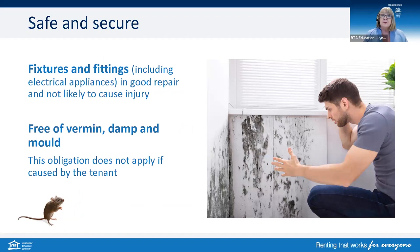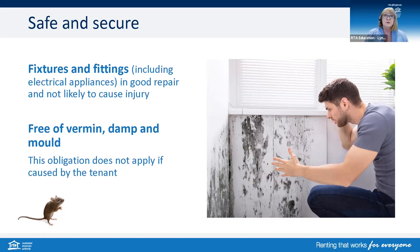Fixtures and fittings need to be in good repair and not likely to cause injury. This includes any electrical appliances included in the property, whether the property is furnished or semi-furnished. The property needs to be free of vermin, damp and mould. This obligation does not apply if the vermin, damp or mould is caused by the tenant. There is information on our website about mould — it's important to know how the mould got there, as that can help guide who is actually responsible.